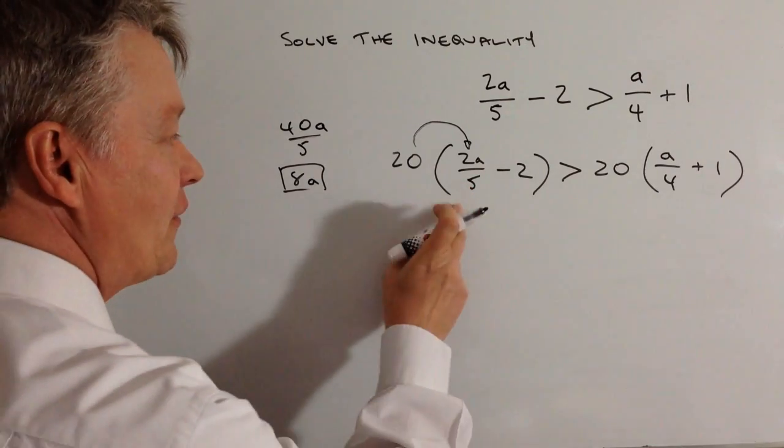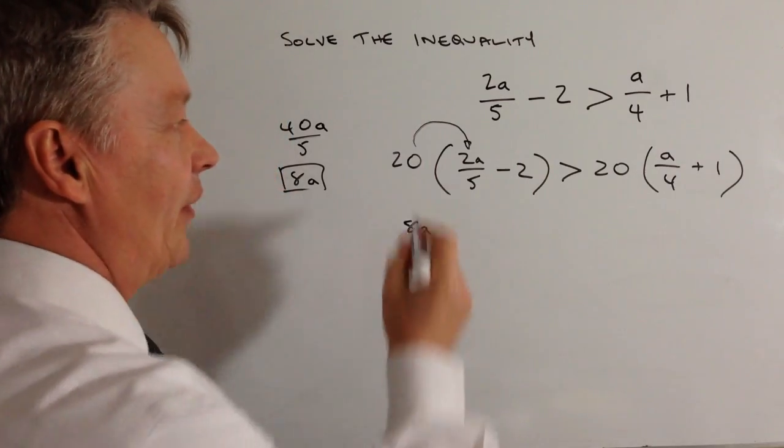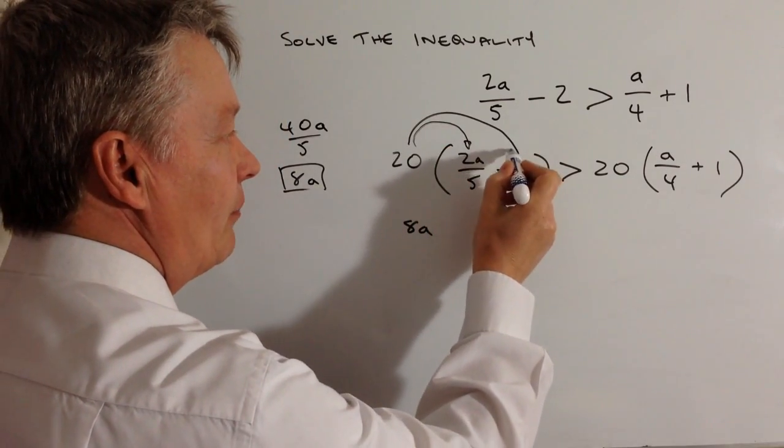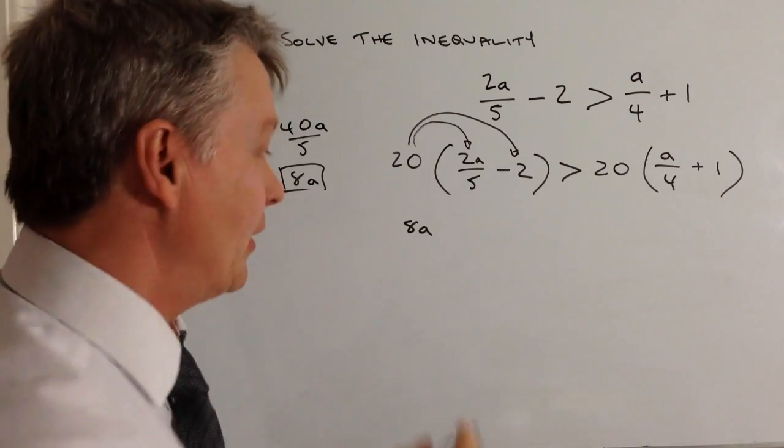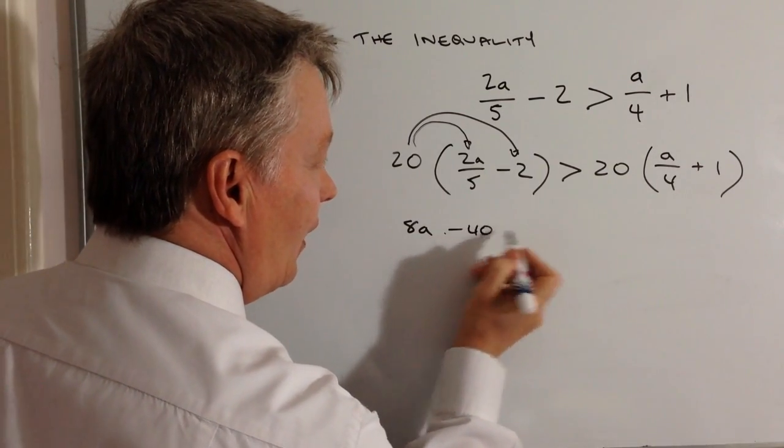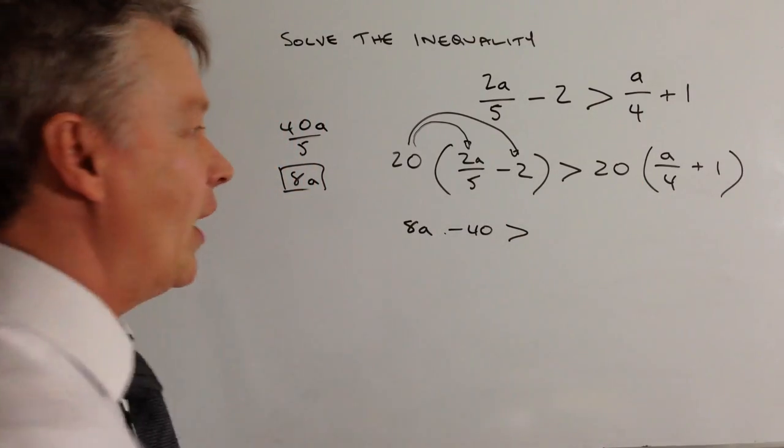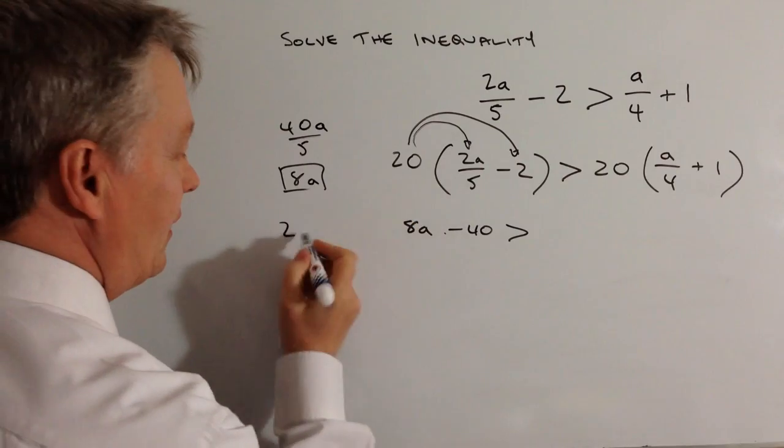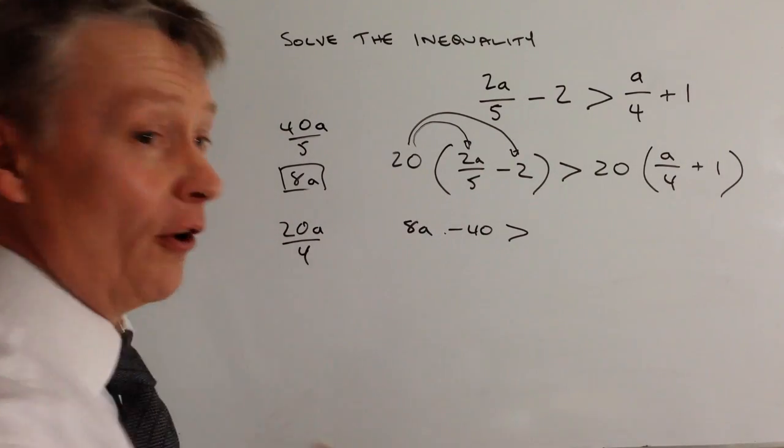So the first term becomes 8a, and the second term becomes 20 times -2, which is -40. That's greater than, and then I've got a similar situation where 20 times a/4 becomes 20a/4.